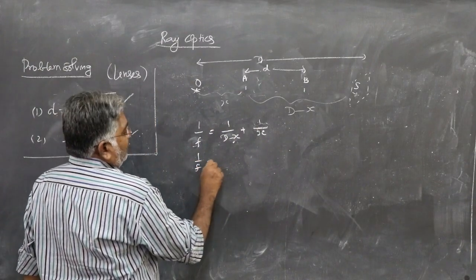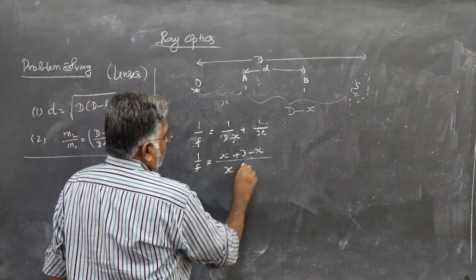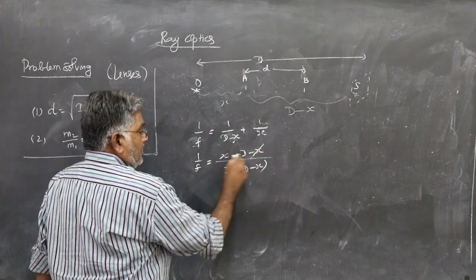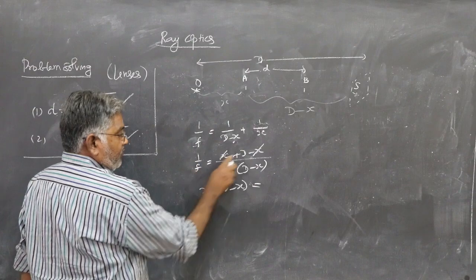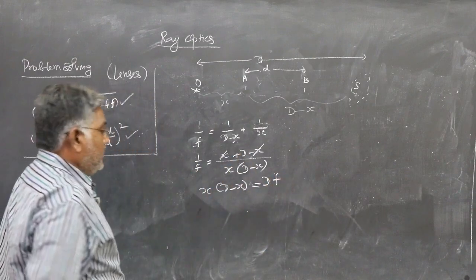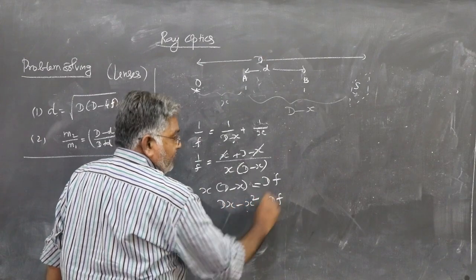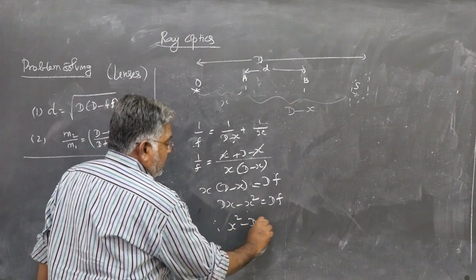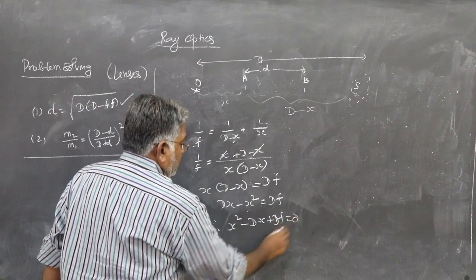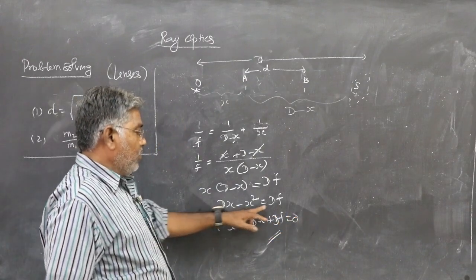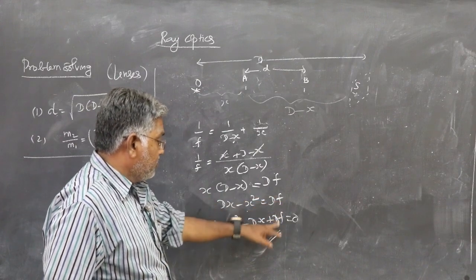So 1/f equals (x + (D minus x)) divided by (x times (D minus x)), which simplifies to D divided by x(D minus x). Cancelling, we get x(D minus x) equals Df. Expanding: Dx minus x² equals Df. Rearranging gives us the quadratic equation: x² minus Dx plus Df equals 0.